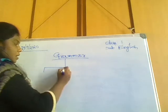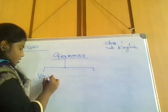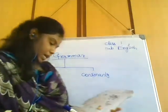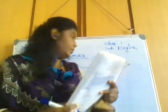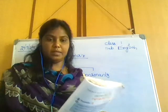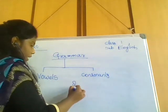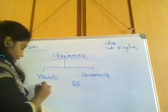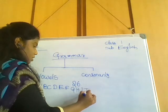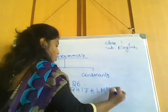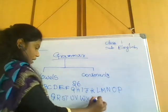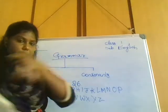In English grammar we have two parts, that is vowels and consonants. So we have two things: one is vowels and the other one is consonants. Today we will see what are vowels and what are consonants. Generally, how many alphabets do we have in English grammar? We have 26 alphabets. That is A, B, C, D, E, F, G, H, I, J, K, L, M, N, O, P, Q, R, S, T, U, V, W, X, Y, and Z. We have alphabets from A to Z.